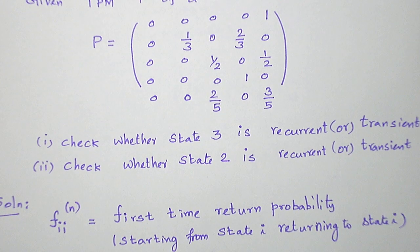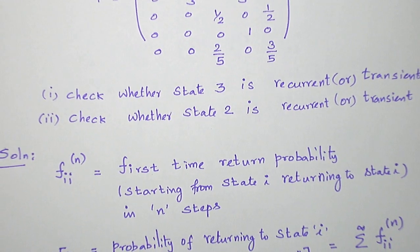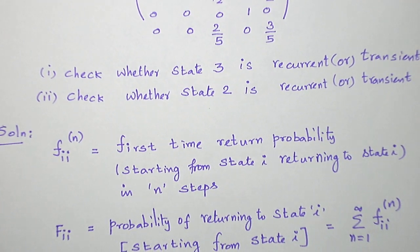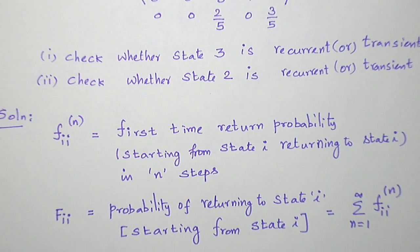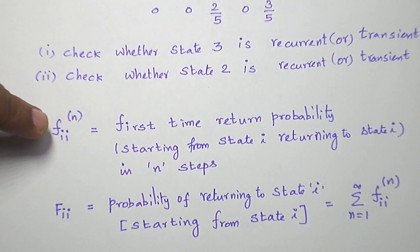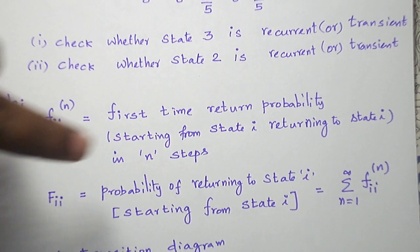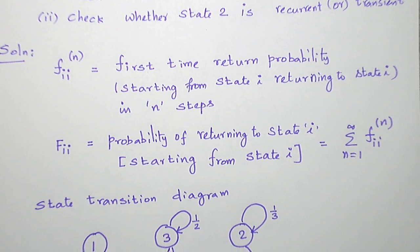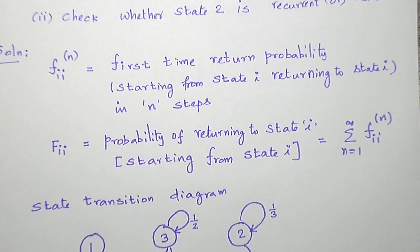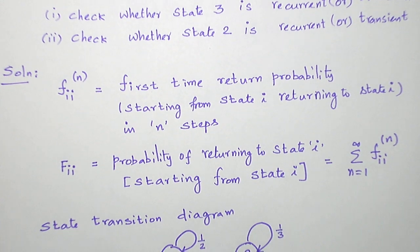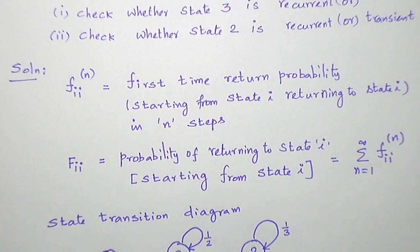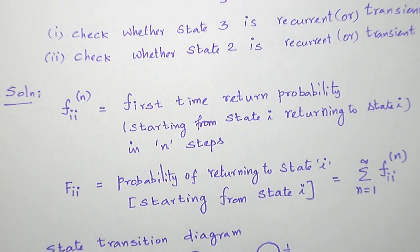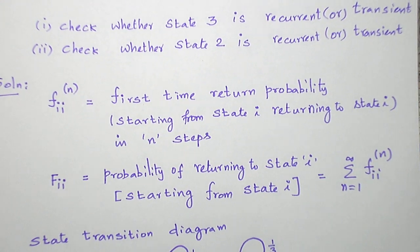Let me give the overview. Let us first find F_ii in N steps, that is the first time return probability to state i. We are starting from state i and returning to state i in N steps. For different steps — one step, two step, three step, and so on — when we add all these first time return probabilities, we get capital F_ii, the probability of returning to state i. If F_ii equals 1, returning to state i is certain, so that state is called recurrent. If F_ii is less than 1, returning is uncertain, so that state is called transient.